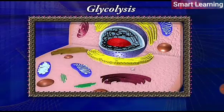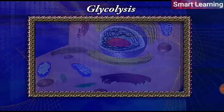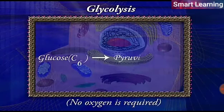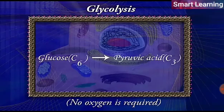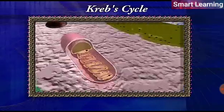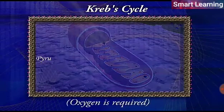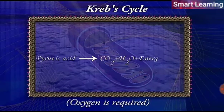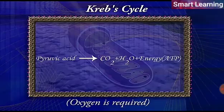In glycolysis, a glucose molecule is broken down into two molecules of pyruvic acid. And in the Krebs cycle, the pyruvic acid is further broken down into carbon dioxide, water, and the energy molecule ATP.